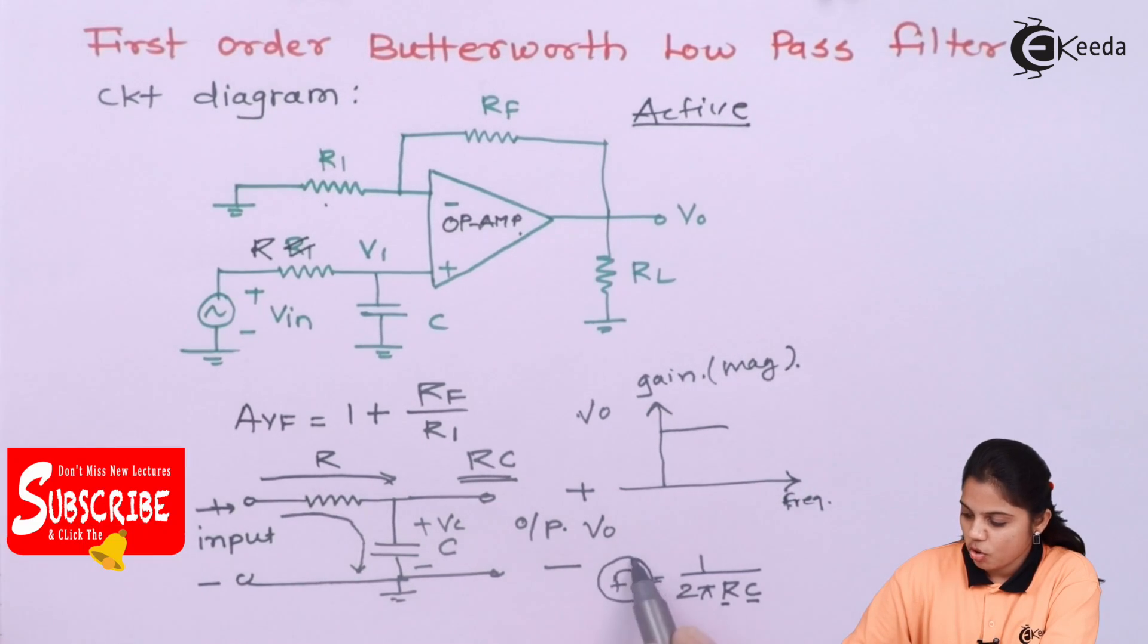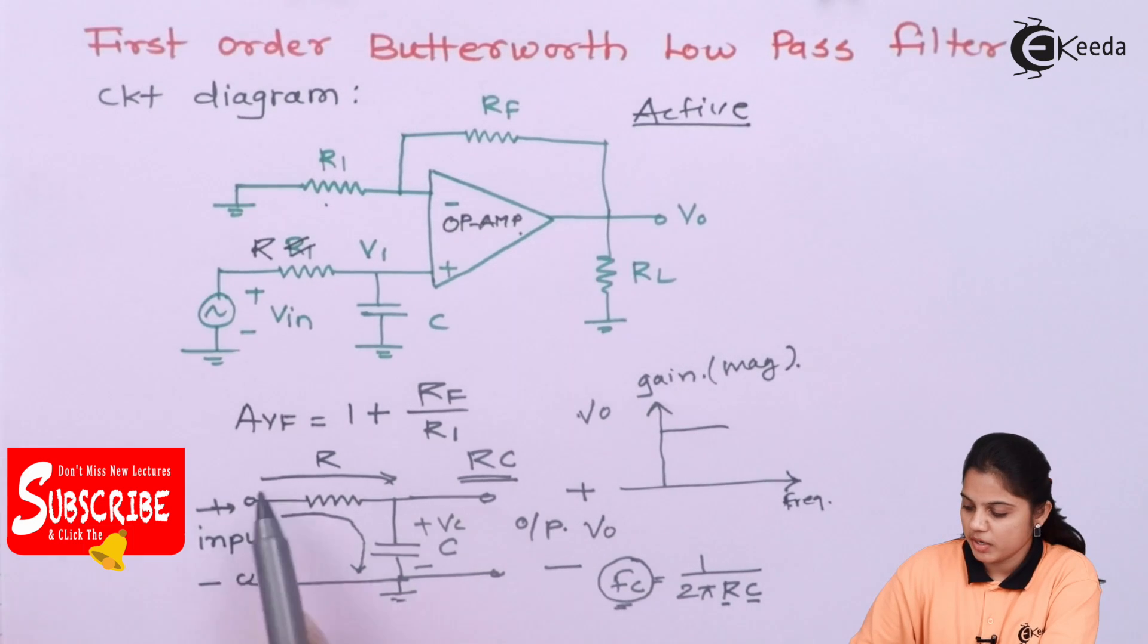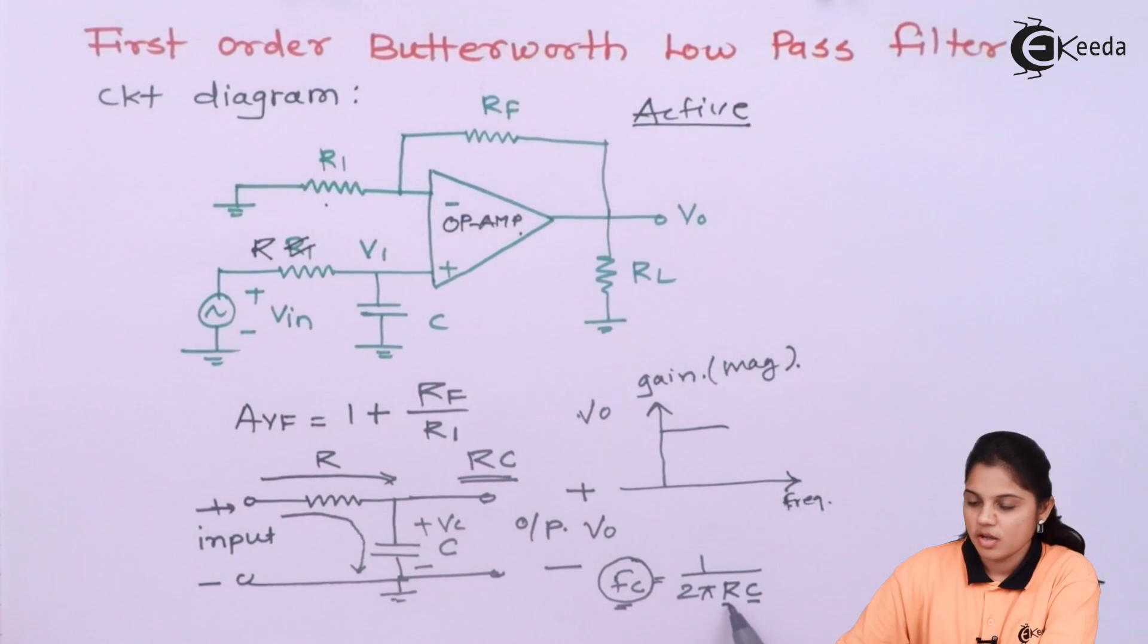So this lower cutoff frequency or the cutoff frequency of this particular circuit can be decided by changing the value of a resistor and capacitor.